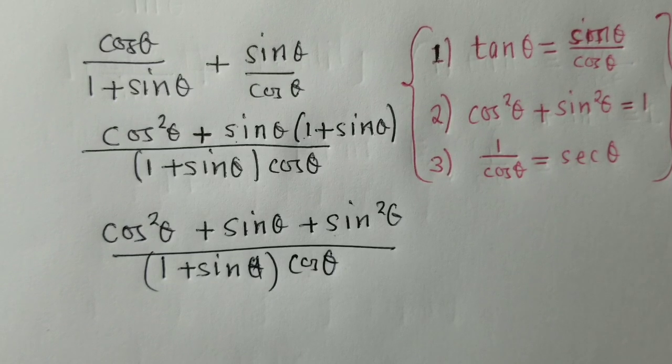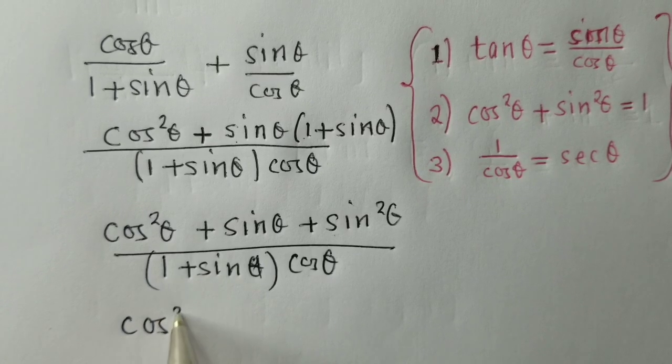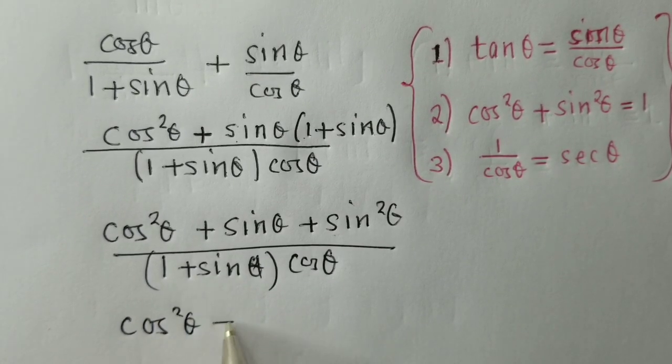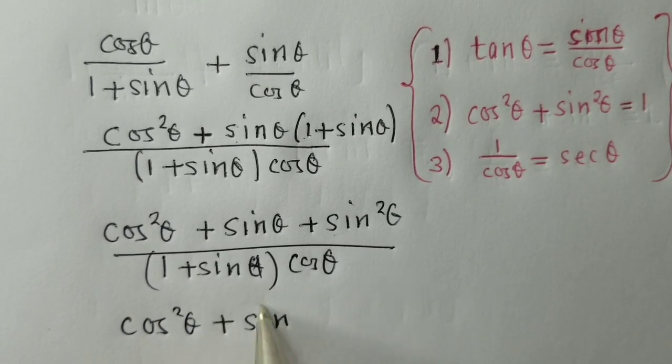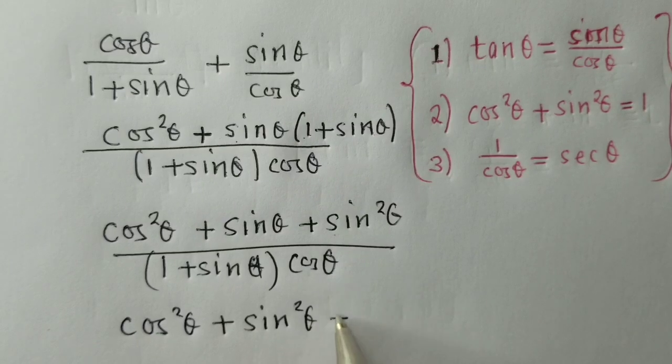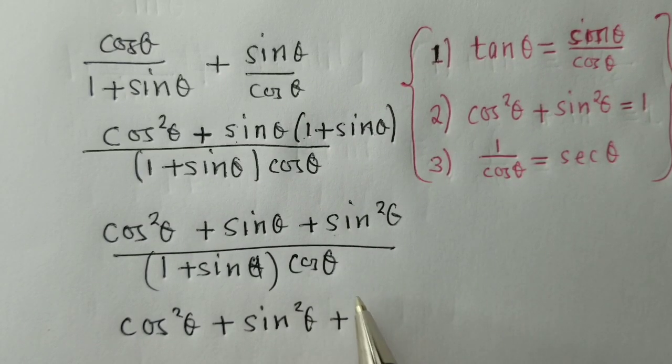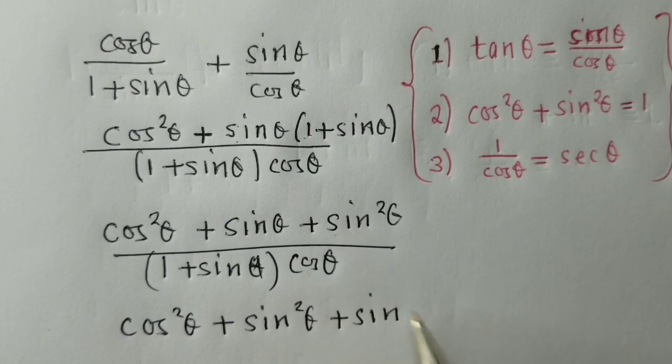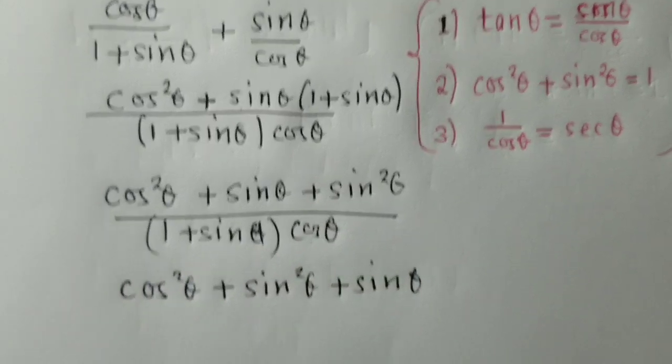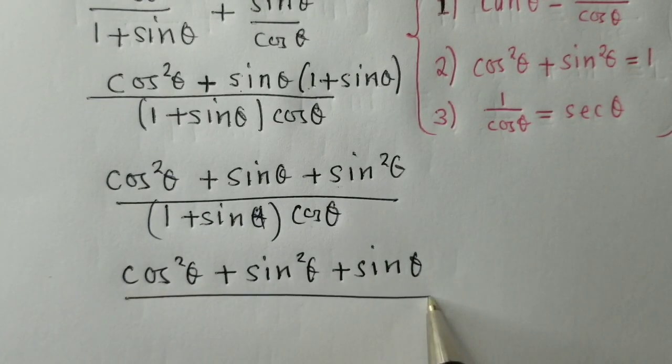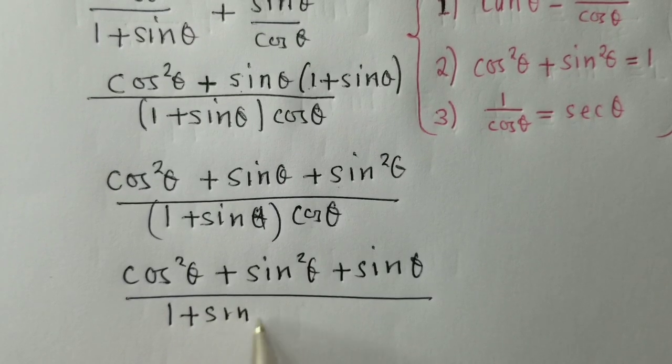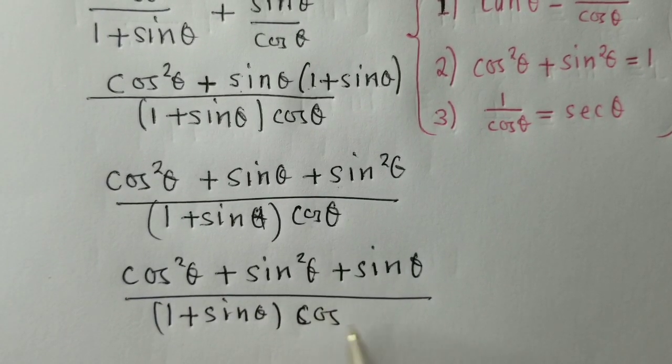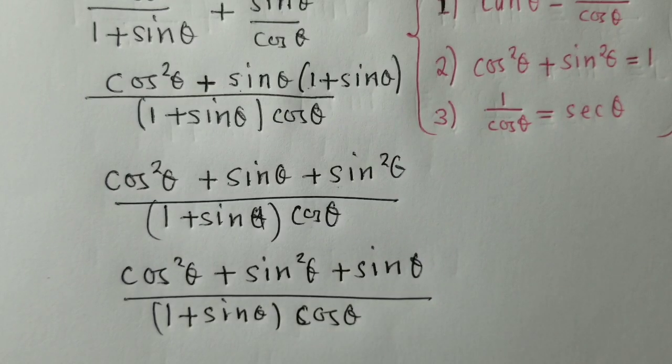So, the next thing here would just be to arrange here because we need to apply one of the identities. I guess you can see there is an identity that is appearing.